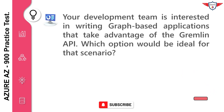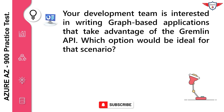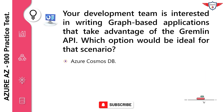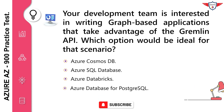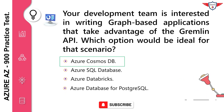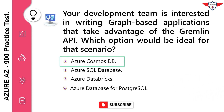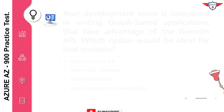Your development team is interested in writing graph-based applications that take advantage of the Gremlin API. Which option would be ideal for that scenario? Azure Cosmos DB. Azure SQL Database. Azure Databricks. Azure Database for PostgreSQL. The correct answer is Azure Cosmos DB. Azure Cosmos DB supports SQL, MongoDB, Cassandra, Tables, and Gremlin APIs.